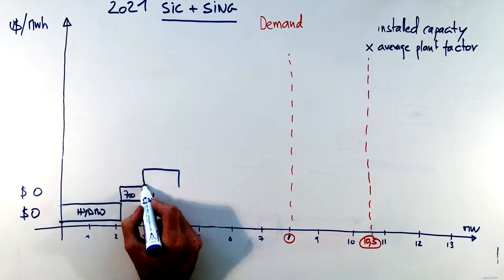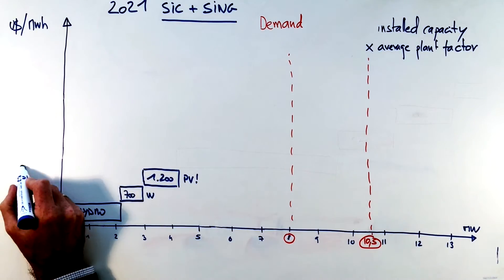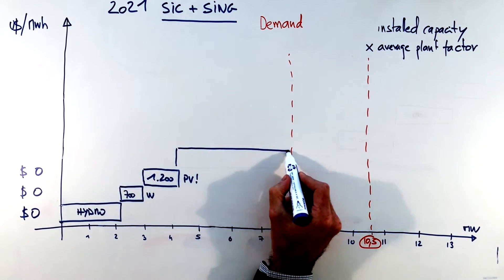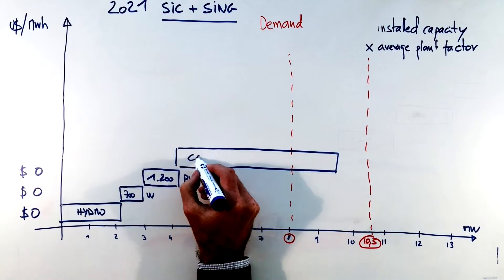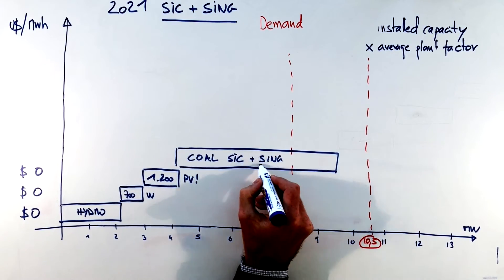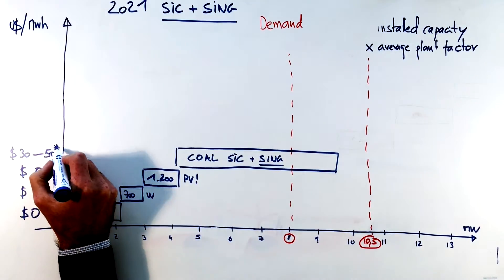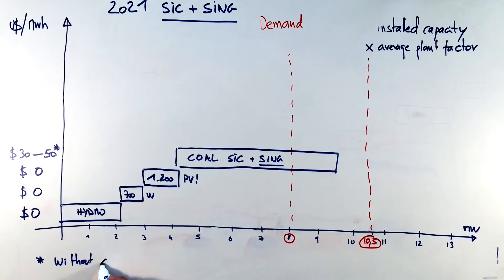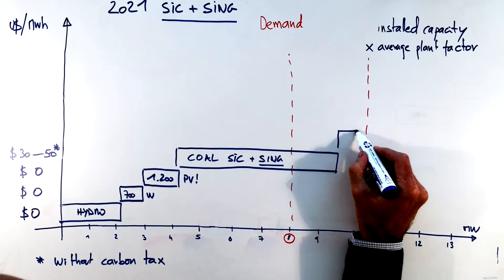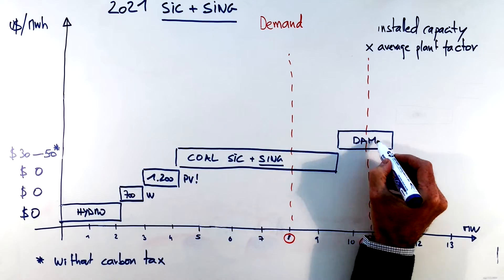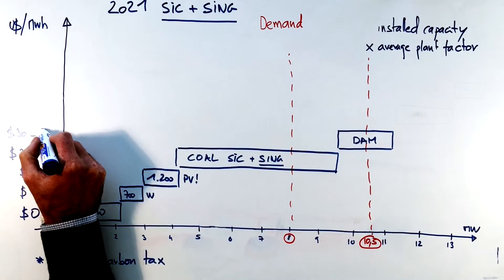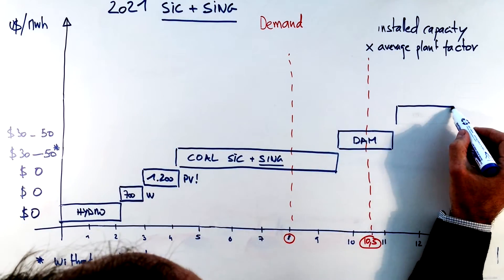We have more wind in 2021, 700 megawatts at zero. We have much more solar, 1,200 megawatts of PV at zero variable cost and we have a huge base of coal because the SING has a lot of coal that comes into the system with a cost of 32 to 50 and we say 50 because we're not considering carbon tax yet.